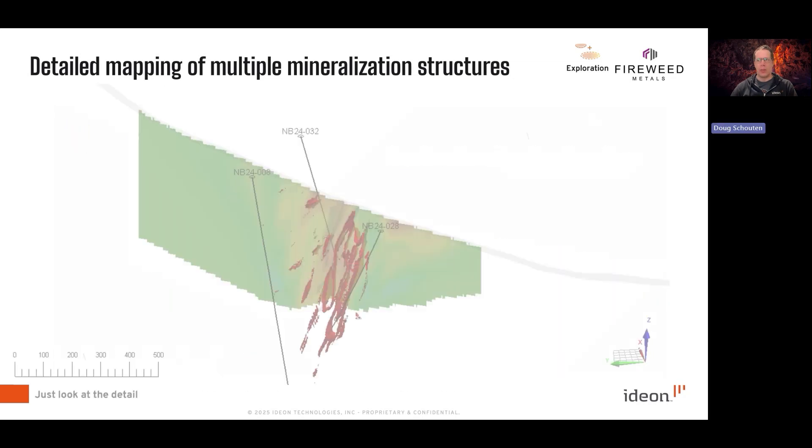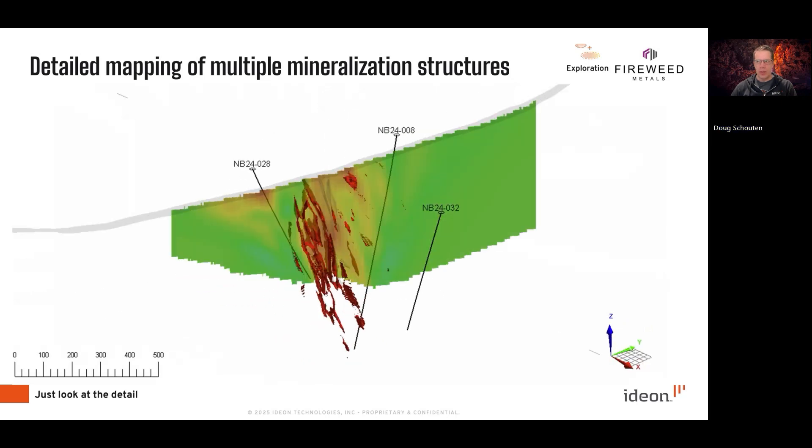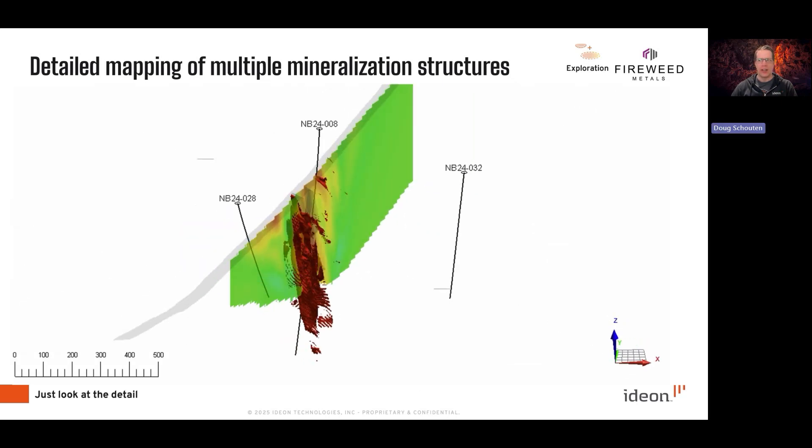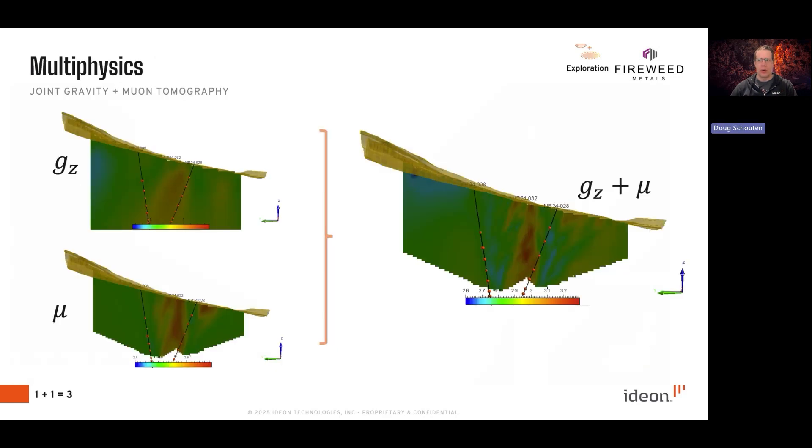Spinning around one particular slice towards the west exemplifies how small secondary lenses off of the main ore body are being resolved in very good detail. Again, this is a completely blind unconstrained muon tomography inversion.